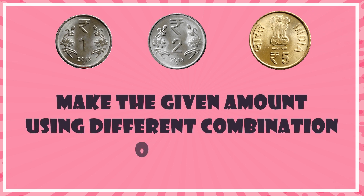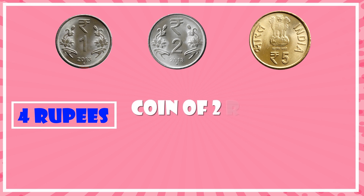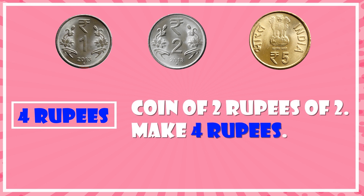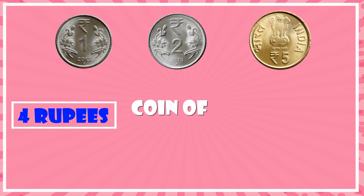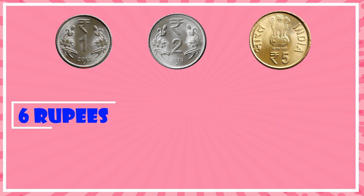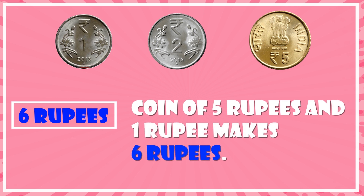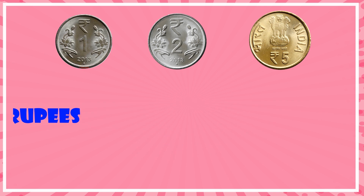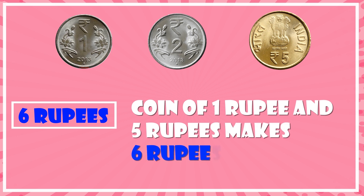One rupee coin, two rupees coin, five rupees coin — make the given amount using different combinations of coins. Four rupees: two coins of two rupees makes four rupees. Four rupees: four coins of one rupee makes four rupees. Six rupees: a five rupee coin and one rupee makes six rupees. Six rupees: a one rupee coin and five rupees makes six rupees.